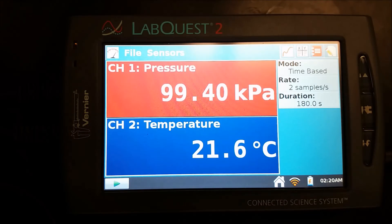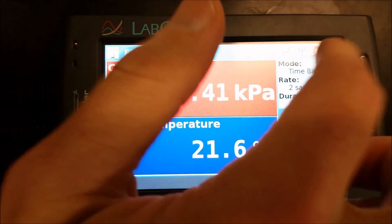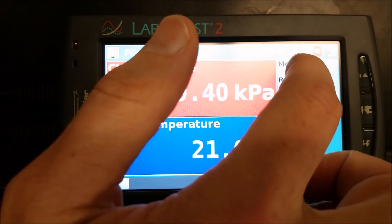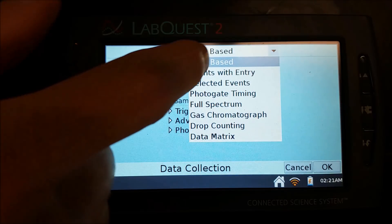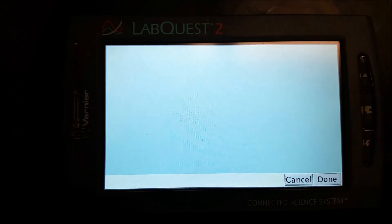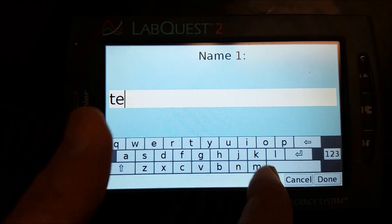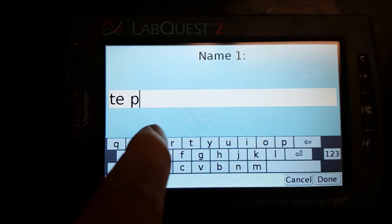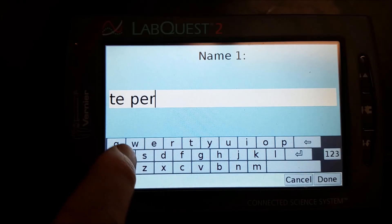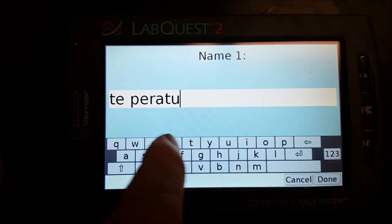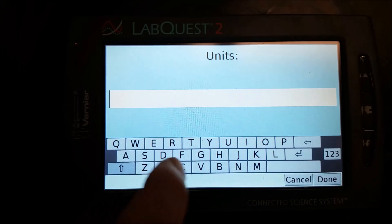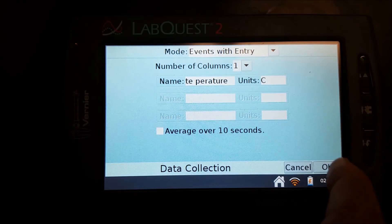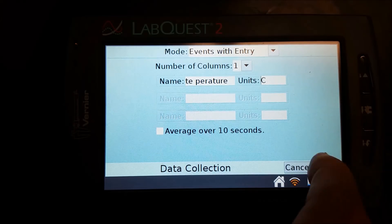So currently, this is all hooked up like I just showed you. And now what we want to do is go through and do all the figuring. So first thing you want to do is you want to go into mode, where it says time-based, you're going to click on that. And instead of time-based, you're going to do events with entry. And then for the event, we're going to do temperature, where we're going to manually type in. And then for our units, we'll go ahead and put Celsius, and then go ahead and hit OK.